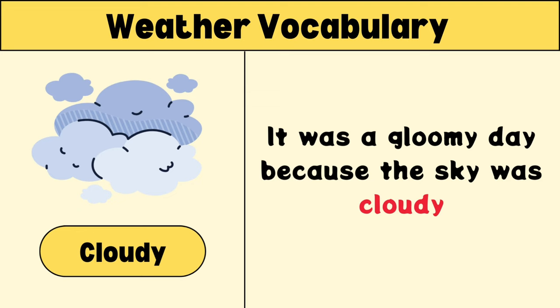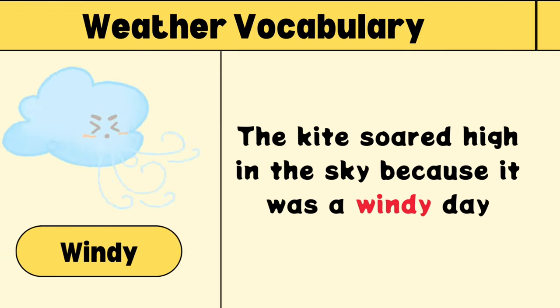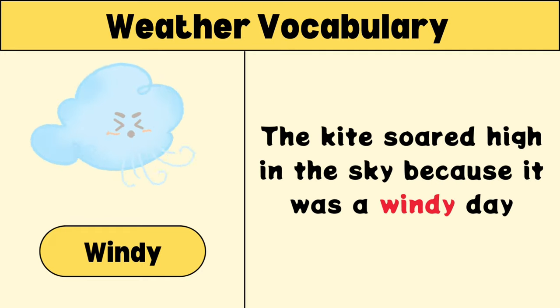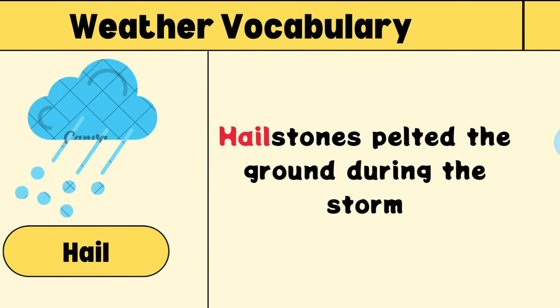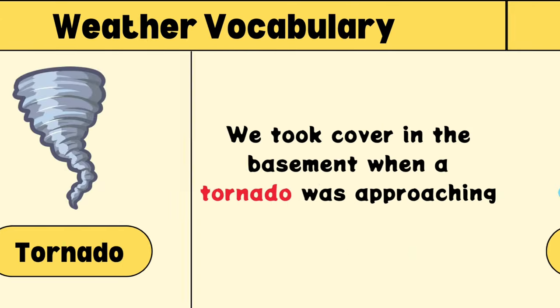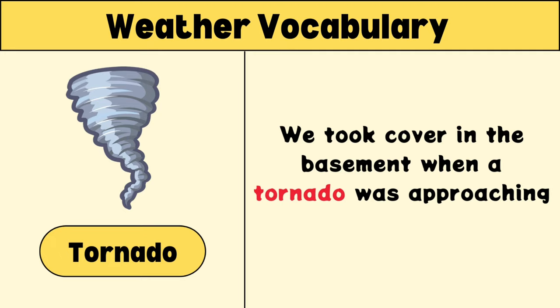Cloudy: it was a gloomy day because the sky was cloudy. Windy: the kite soared high in the sky because it was a windy day. Hail: hailstones pelted the ground during the storm.